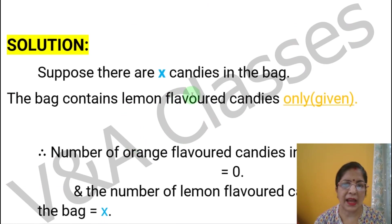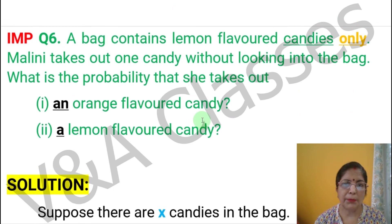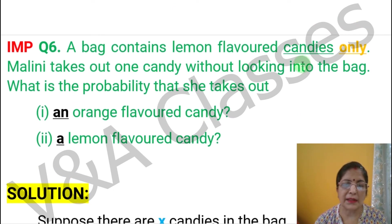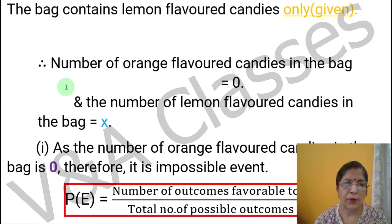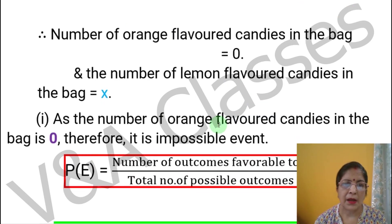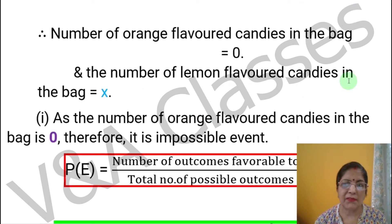Suppose there are x candies in the bag, because the total number of candies in the bag is unknown, so we take it as x. The bag contains lemon flavor candies only. So the number of orange flavor candies in the bag equals zero, because the question clearly states that in the bag there are only lemon flavor candies. And the number of lemon flavor candies in the bag equals x.